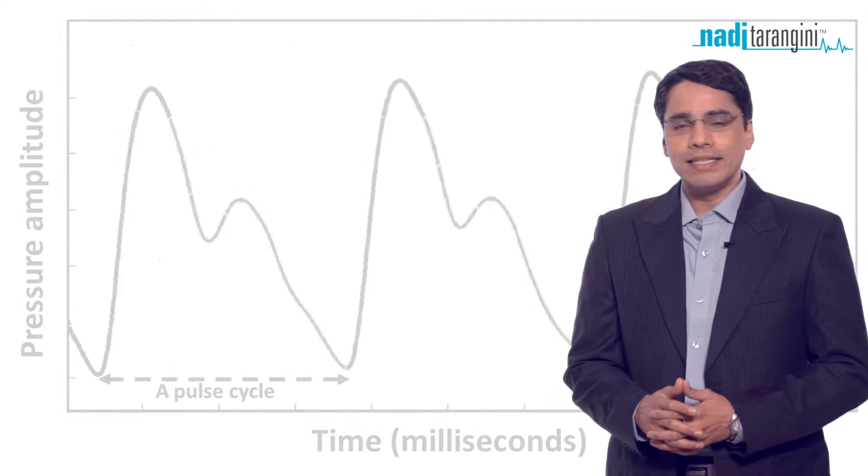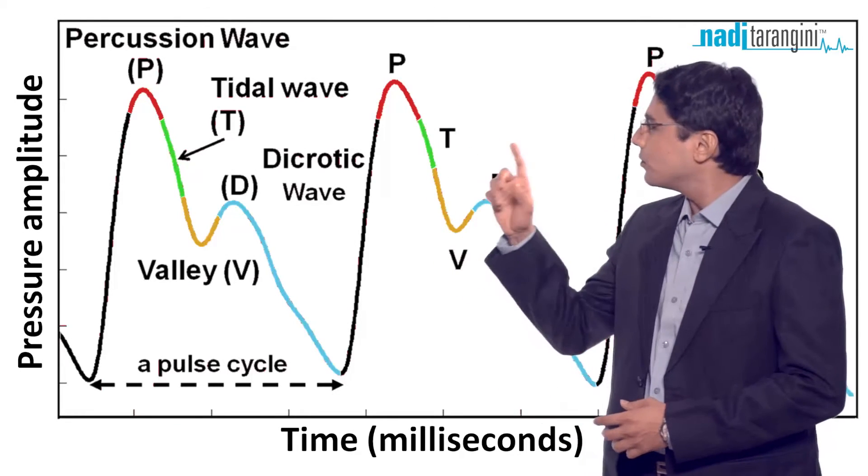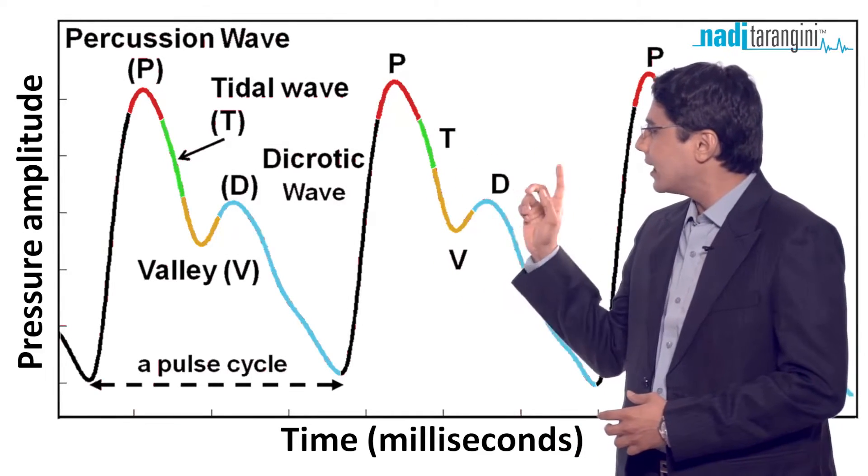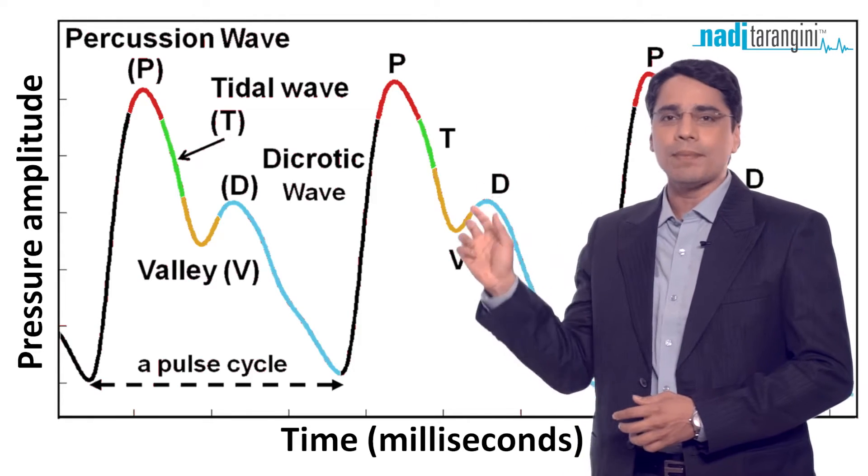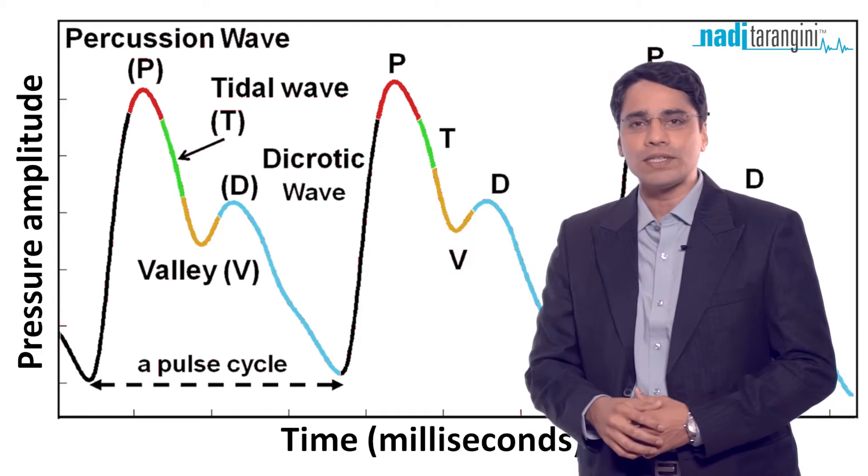Every pulse beat is comprised of four subwaves: the percussion wave, the tidal wave, the valley, and the dicrotic wave. It follows the P-T-V-D pattern, similar to how ECG goes P-Q-R-S-T. The pulse signal goes P-T-V-D,